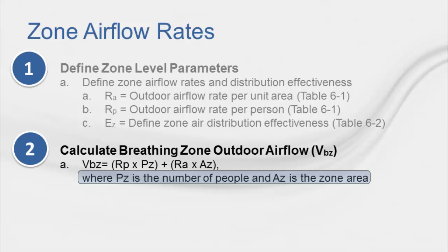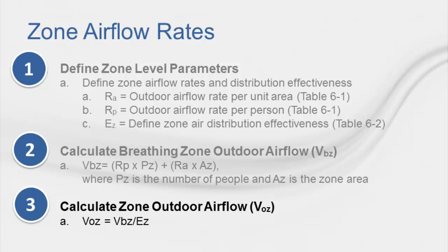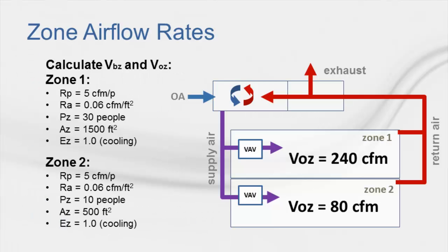In equation 6-1, P sub Z represents the number of people in the zone, and A sub Z represents the zone's unit area. In Step 3, you can calculate the zone outdoor air flow, V sub OZ. This is the outdoor air flow rate that must be provided to the ventilation zone by the supply air distribution system. The zone outdoor air flow rate is calculated using the equation V sub OZ equals V sub BZ divided by E sub Z. So now that we know the equations for the zone level outdoor air flow rate calculation, we can calculate V sub BZ and V sub OZ for zone 1 and zone 2.